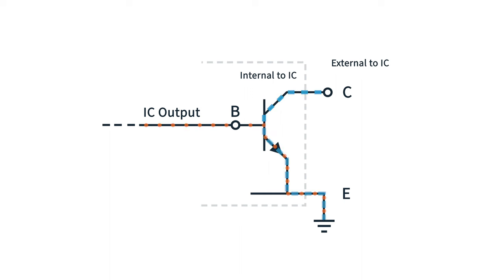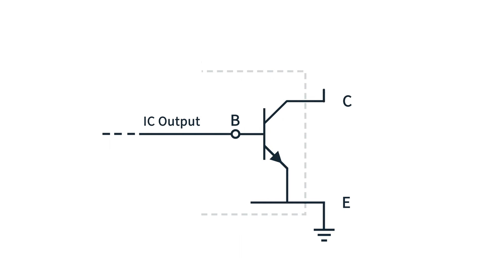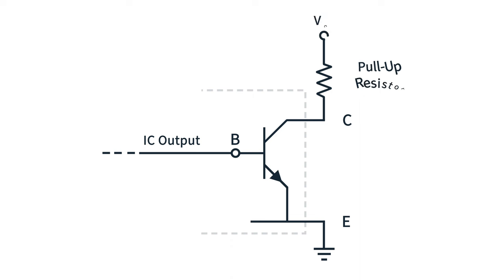With an open collector GPIO, if you want a high voltage in the high impedance state, you will need a pull-up resistor or something like that. Sometimes this is provided internally, sometimes it's not, and you need to provide it externally.